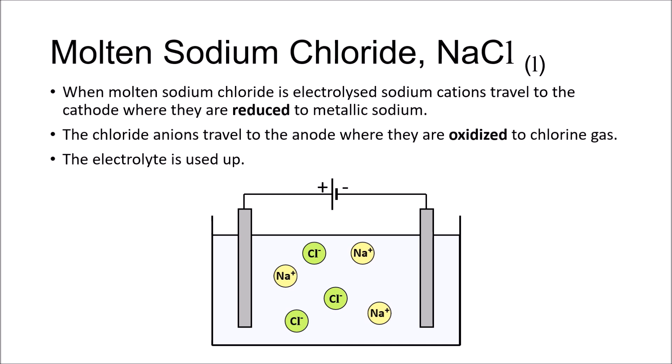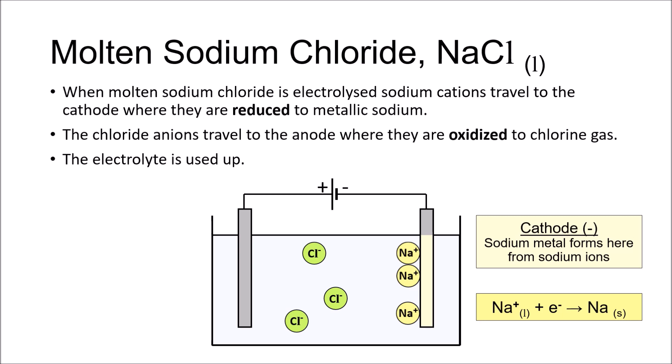The sodium cations travel to the cathode, where each one is reduced by gaining an electron. Hence, the very reactive metal sodium is produced at the cathode.